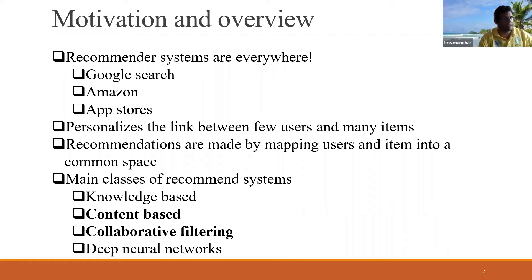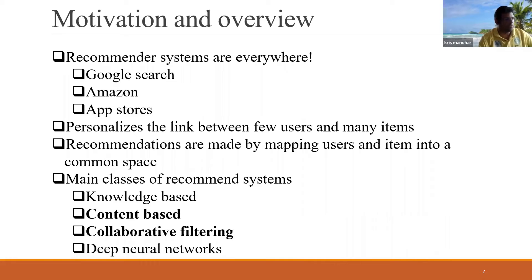Getting access to relevant information is now the key. The better you can profile people, the better you can have targeted ads and so on. This idea of personalization is the thing recommender systems address. The recommender problem is that we have way more items than users. Different approaches include knowledge-based, content-based, collaborative filtering, and deep neural networks.